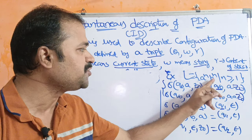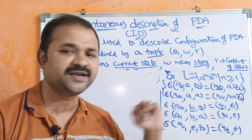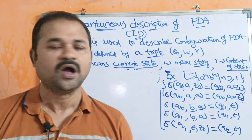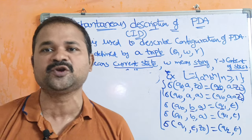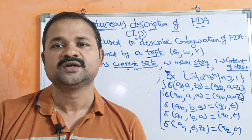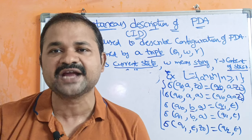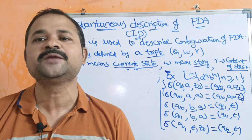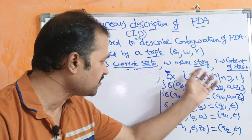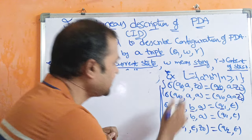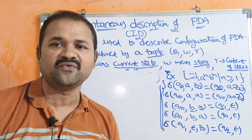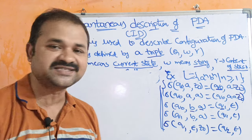The language is L = a^n b^n, where n is greater than or equal to 1. We have already seen this example — I will share the link in the description. If you are unfamiliar with this example, please go through that link. For this language, the transition functions are — totally we have 5 transition functions.